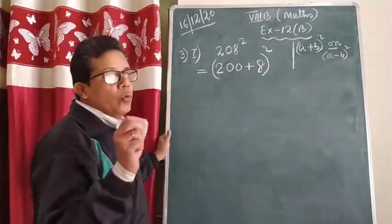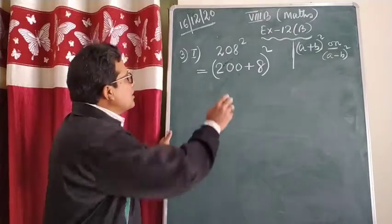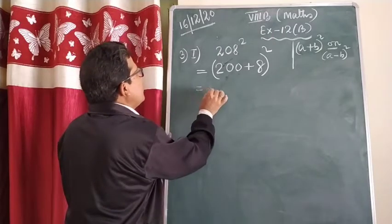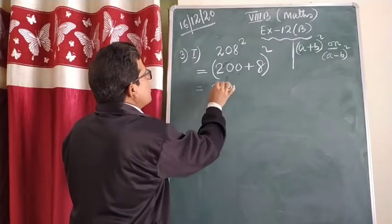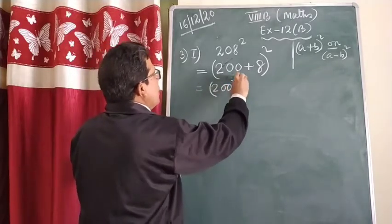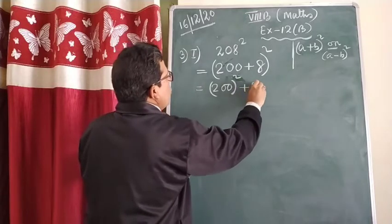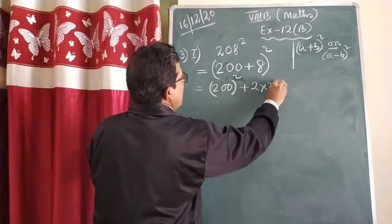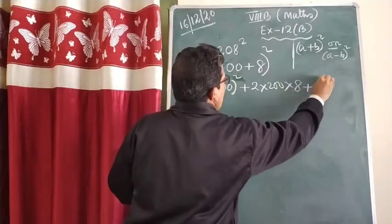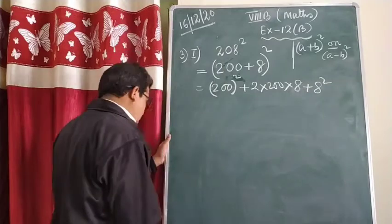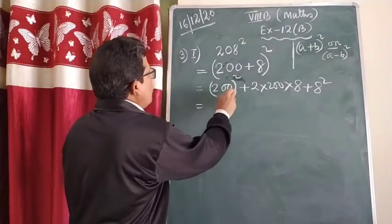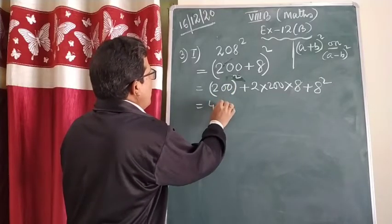So it comes in the form of (a+b)², and all of us know what (a+b)² is: a² plus 2 times the first one times the second one, plus the second one squared. So here, 200 squared means the first term gives 4 followed by four zeros — 40,000. Then 2 times 200 times 8.